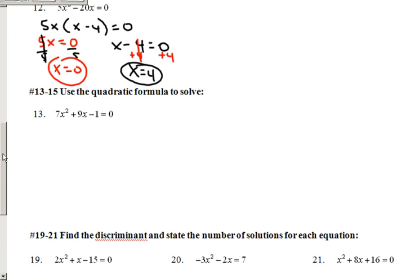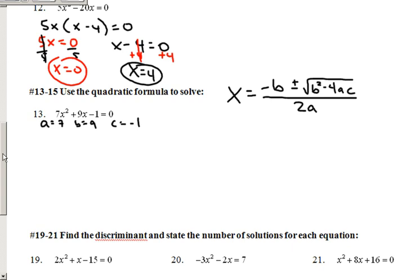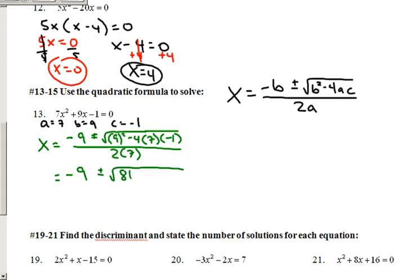Last one of solving types here, quadratic formula. It's very important you remember. x equals negative b plus or minus square root b squared minus 4ac all over 2a. That's the quadratic formula. If I'm looking at this and I say a equals 7, b equals 9, c equals negative 1, all we're going to do is plug numbers in. So we're going to have x equals negative 9 plus or minus the square root of 9 squared minus 4 times 7 times negative 1, all over 2 times 7. Now we do some simplifying. Negative 9 plus or minus the square root of 81 plus 28 all over 14.